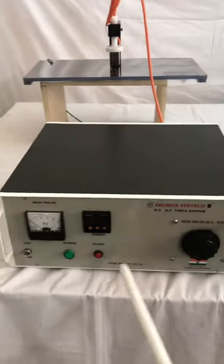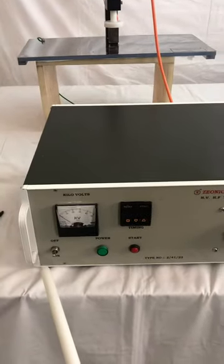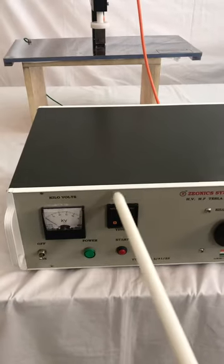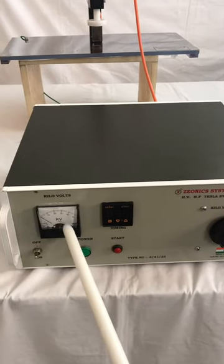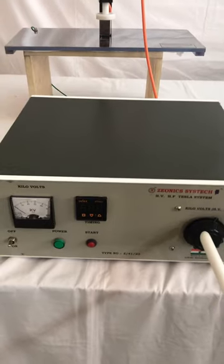The HVHF Tesla system has the power control, the timer, the kilovolt display meter, and the kilovolt variator.